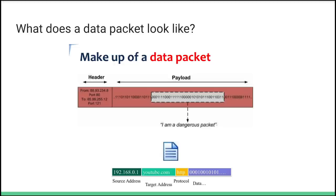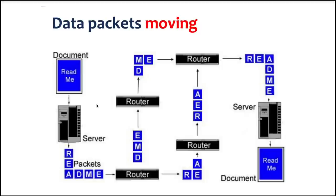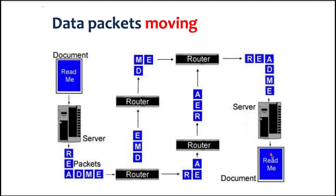A data packet has a payload — which is binary data like your photo, text file, or movie — and a header containing the sender and destination. There's also a footer or trailer. Data passes through a series of routers: it starts on one server, gets broken up, and passes through multiple routers until it reaches its destination.